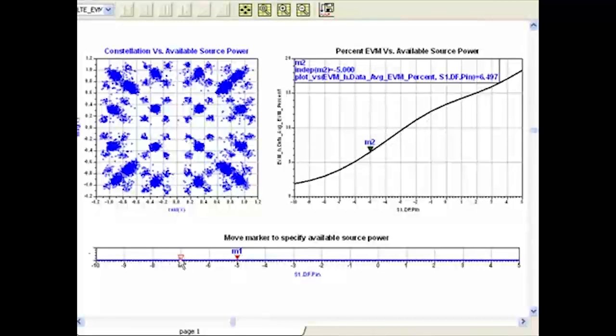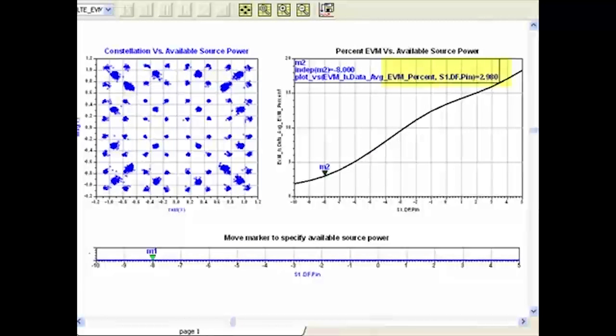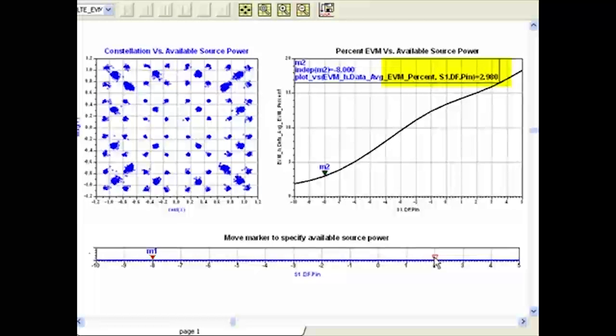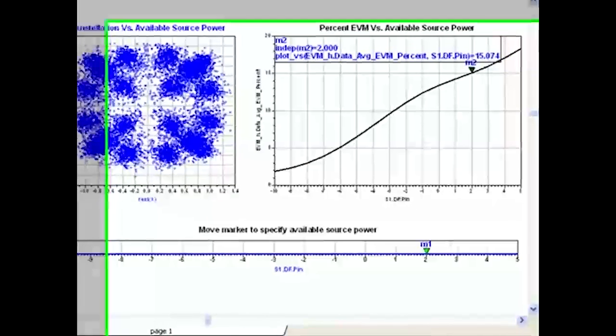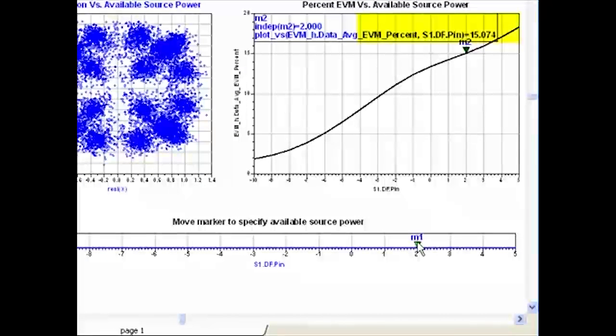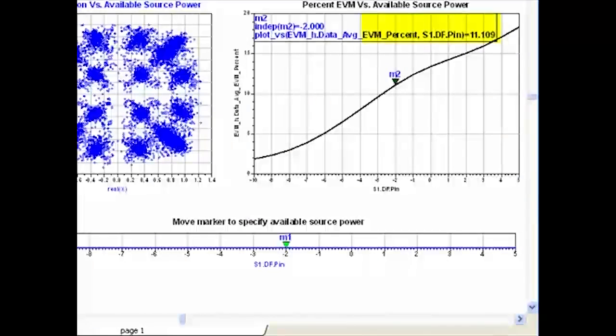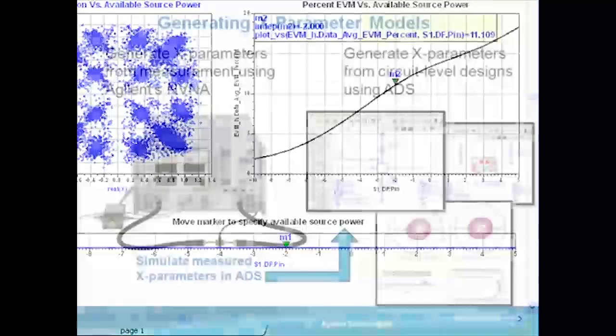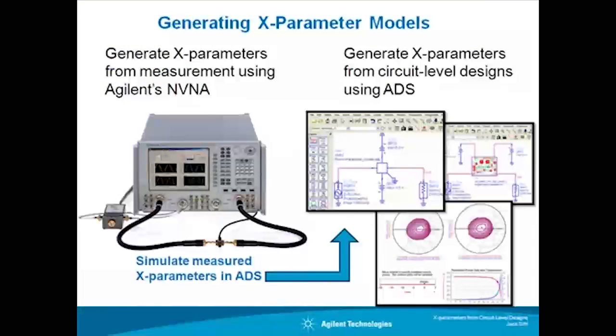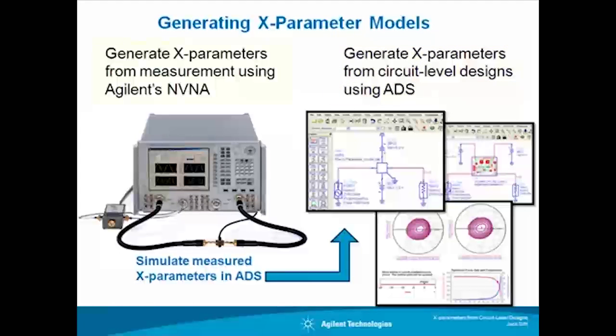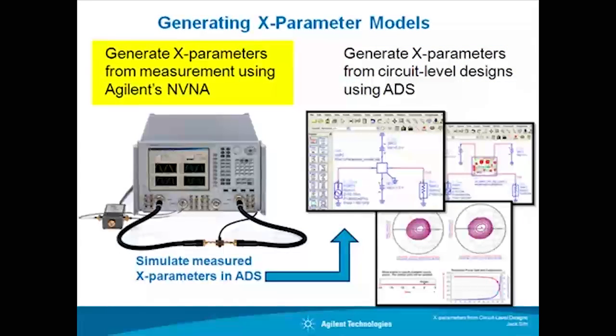So here is the constellation at minus 8 dBm. And here is the constellation at plus 2 dBm with a corresponding EVM equal 15%. And here it is at minus 2 dBm. X parameters can be generated from both simulation using ADS and measurement using the nonlinear vector network analyzer for faster design development.